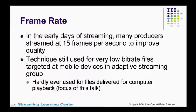Now what about frame rate? Back in the early days of streaming — maybe the late 90s and early 2000s — a lot of producers reset the frame rate to 15 frames per second to improve quality. You still see that technique used in very low bit rate files and a lot for people targeting mobile, especially with adaptive files. But it's hardly ever used for the sweet spot — the 640 by 360 at 1.2 megabits per second. If you're in the mid-range of the adaptive group or producing for computer or OTT playback, always produce at full frame rate.